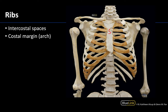These ribs are going to be attached to the sternum via costal cartilages. Some of these ribs will have their own individual costal cartilage, and some will share a costal cartilage for attachment to the sternum. Where the end of this shared costal cartilage terminates is going to be referred to as the costal margin or the costal arch.